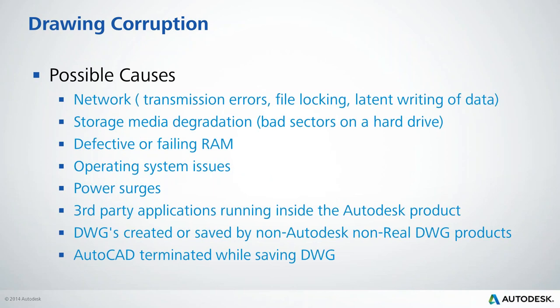Some causes of files becoming corrupt: network latency causing issues as files go back and forth, a problem with your hard drive or RAM, operating system issues, a power surge, or third-party applications — I'm not saying they always do, but that can be a cause of corruption. Also, anything created by a non-Autodesk application: when you open a DWG file created by a non-Autodesk app, you'll get a warning. It doesn't mean the file is junk, but it's a flag that if you have a problem with it, you probably want to run Recover on the file.